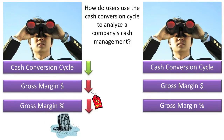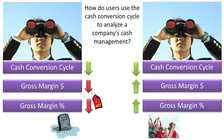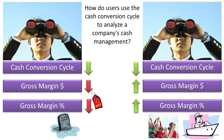However, if its cash conversion cycle declines and its gross margin and gross margin percentage both increase, this would normally be a sign that the market for the company's products is improving and that it is managing its inventory, credit, collections, and payables efficiently and effectively.